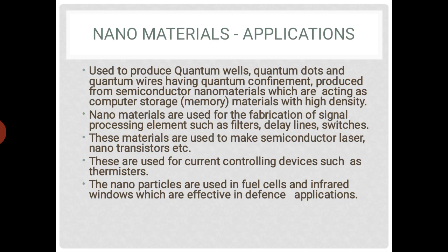Nanomaterials produced from semiconductor materials act as computer storage material with high density. They are used for fabrication of signal processing elements such as filters, delay lines, and switches. They are also used to make semiconductor lasers and nanotransistors, as well as current-controlling devices such as thermistors. Nanoparticles are also used as fuel cells and infrared windows, which are effective in defense applications.